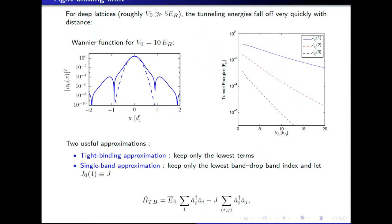Very quickly, what you can do is just neglect most terms in this Hamiltonian, except the dominant ones: one which is just an on-site energy for the same site, and one which connects only the nearest neighbors of the lattice. So this tight-binding approximation gives you a model where an atom can tunnel only to the nearest neighboring sites. Usually you can also supplement this with a single-band approximation, keeping only the lowest Bloch band, and you end up with this tight-binding model, which takes a much simpler form than the full Hamiltonian.